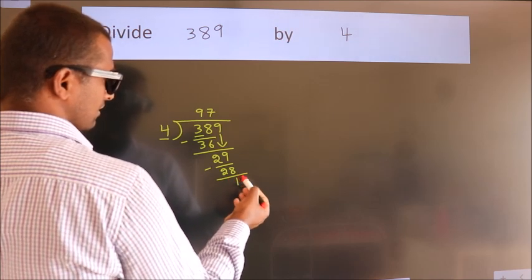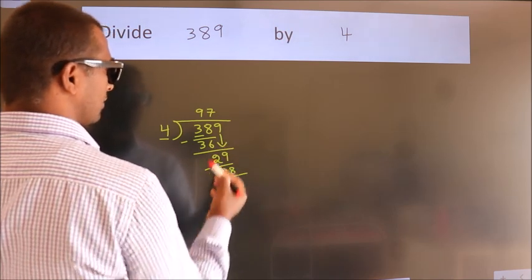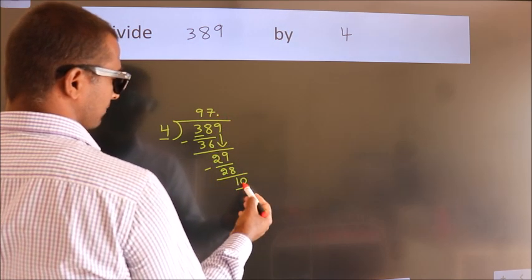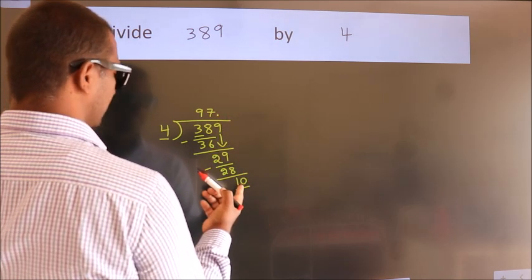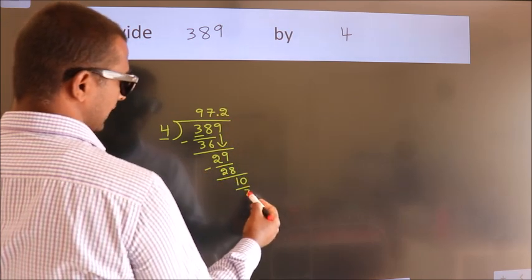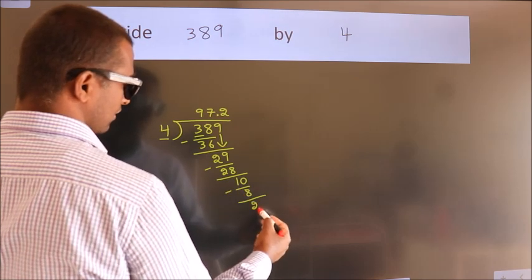After this, no more numbers to bring down. So what we do is, we put dot, take 0. So 10. A number close to 10 in 4 table is 4 twos, 8. Now we subtract. We get 2.